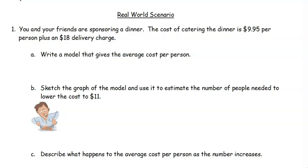We want to write a model that gives the average cost per person. So we think about it. If one person is going, they have to pay $9.95 for themselves plus they're the only ones responsible for that $18 delivery charge. If we have two people, we've got $9.95 per person, but then those two people split the $18 delivery charge. And if we have three people, we've got three $9.95 people for the plates and then those three people are splitting that $18 delivery charge.